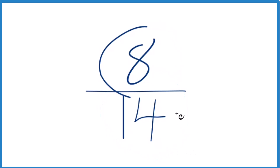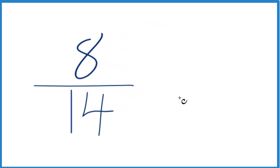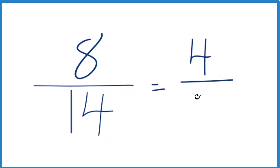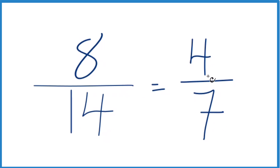Let's divide each by 2 since they're even numbers — that's always a good place to start. 8 divided by 2 is 4, and 14 divided by 2 is 7. So when we simplify 8/14, we end up with 4/7. We can't simplify this further; it's in lowest terms. The greatest common factor is just 1.